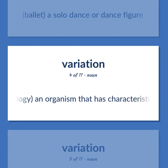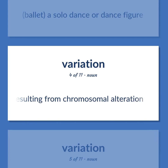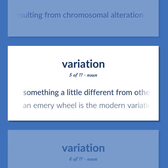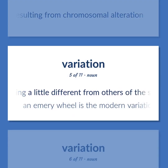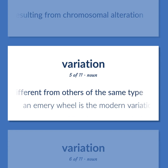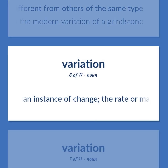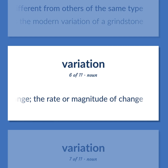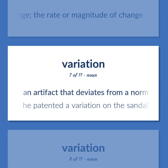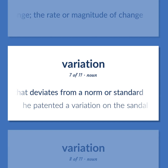Biology: an organism that has characteristics resulting from chromosomal alteration. Something a little different from others of the same type — for example, an emery wheel is the modern variation of a grindstone. An instance of change; the rate or magnitude of change. An artifact that deviates from a norm or standard — he patented a variation on the sandal.